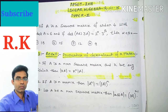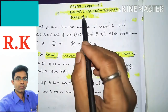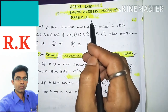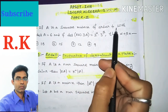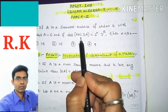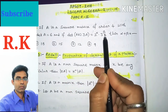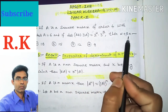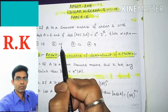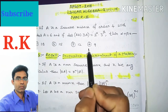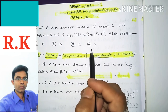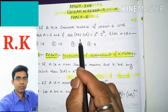Hi everyone, this is Ramakrishna. Welcome to my channel. In this video I'm going to discuss GATE 2018 linear algebra question number 15 from Paper 2. The question is: if A is a square matrix of order 4 with det(A) equal to 6, and det(adj(3A)) equals 2^alpha times 3^beta, then alpha plus beta equals — with options 18, 15, 12, and 9.